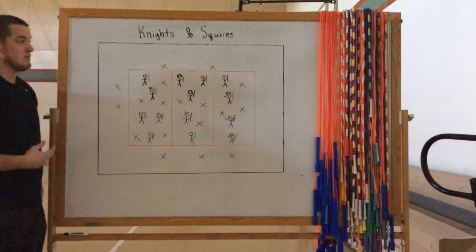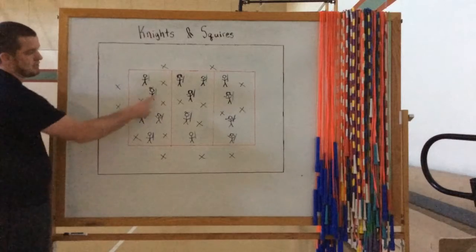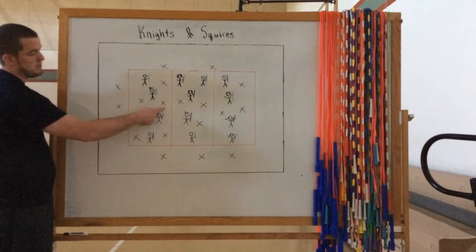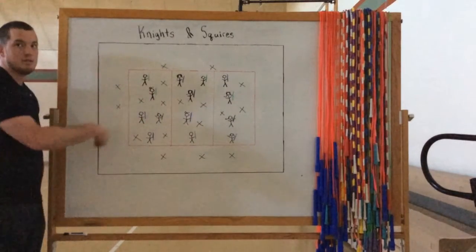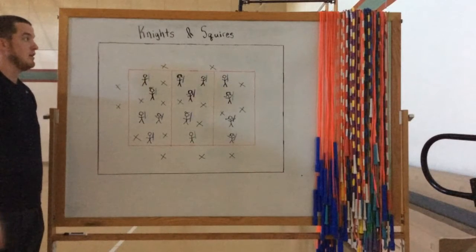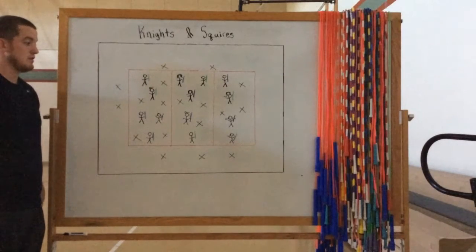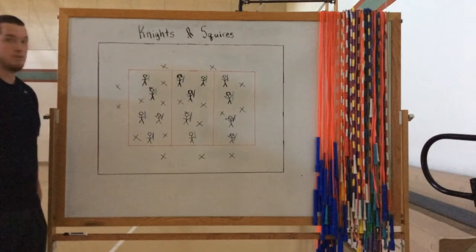So this is Knights and Squires. And once, oh I forgot, once they give their pool noodle to the person that's sitting down, they become a Squire and they sit down and wait for their turn again. Basically that's how Knights and Squires works. The kids really love it. I hope you like it too. Bye.